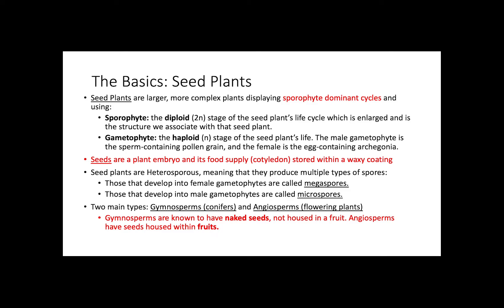Seeds are a plant's embryo and its food supply — the cotyledon — stored within a waxy coating. Seed plants are heterosporous, meaning they produce multiple types of spores: one developing into a male gametophyte and one into a female gametophyte. Those that develop into female gametophytes are called megaspores, and those that develop into male gametophytes are called microspores.